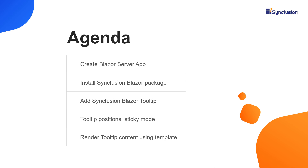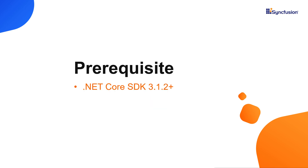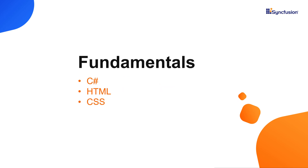To explore the features available in tooltip, visit our website link provided in the above YouTube card. You can create a Blazor application using either Visual Studio 2019 or Visual Studio Code. In this video, I will create a server side Blazor application using Visual Studio 2019. I have installed the .NET Core SDK 3.1.2. To follow along with this video, one should have a basic understanding of C#, HTML and CSS.